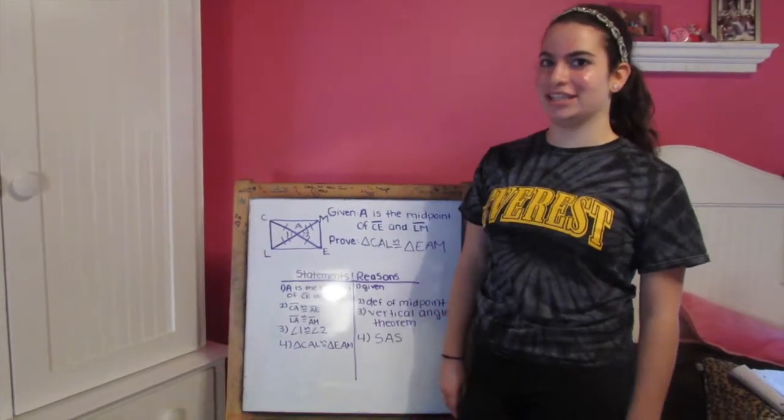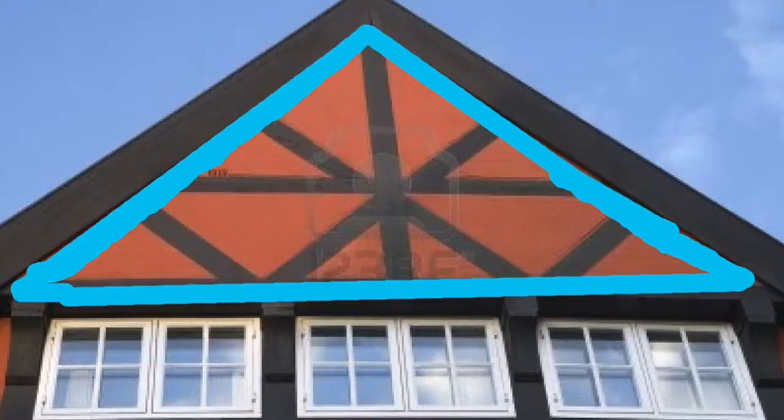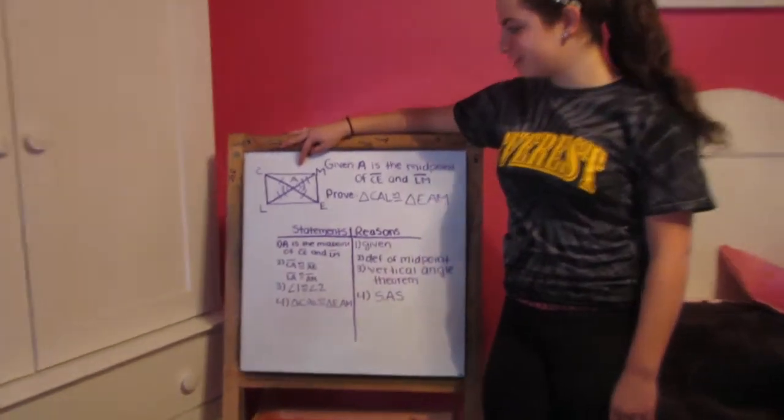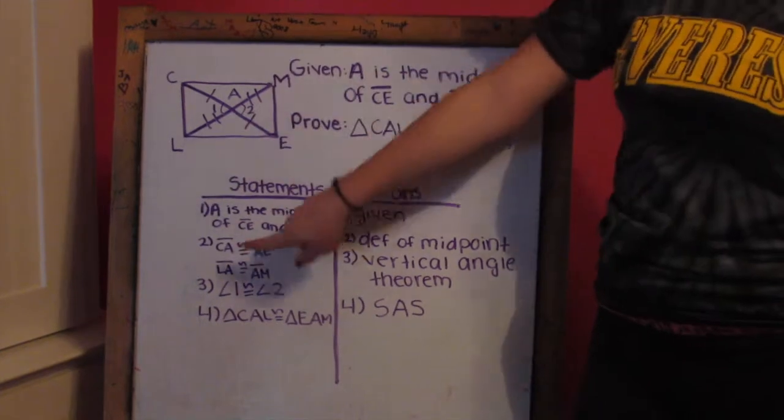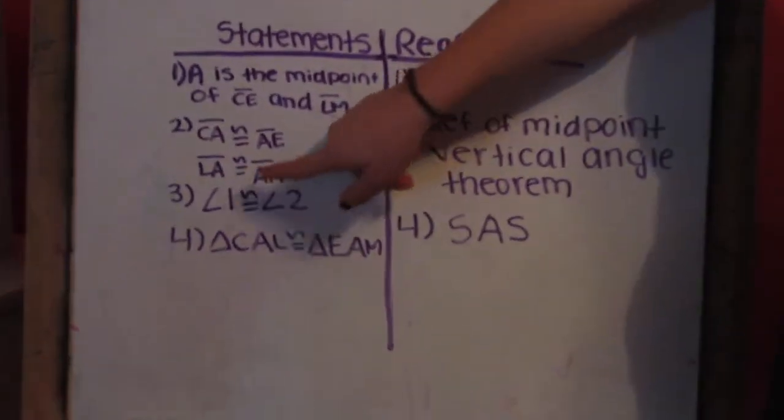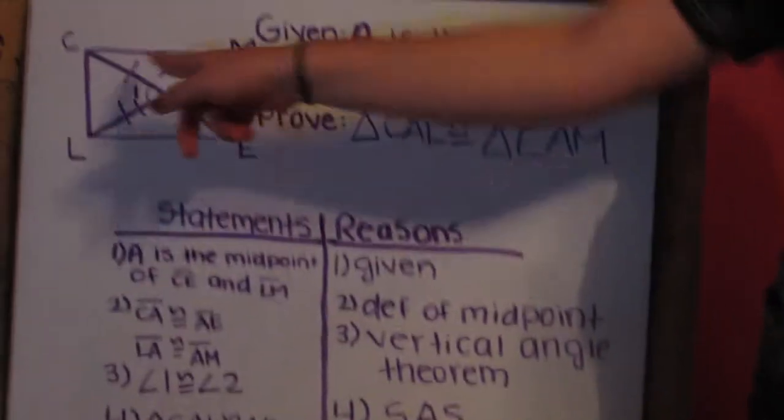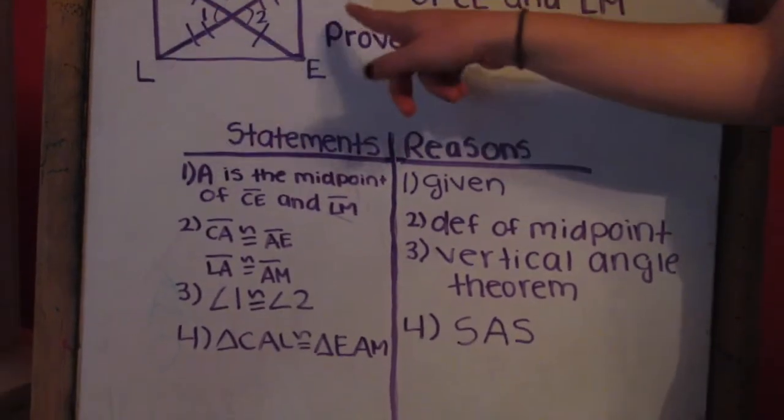In real life, architects need to know congruent triangle proofs so that the roofs don't collapse. Pretend that this is the aerial view of the roof of the house. The given is that A is the midpoint of segment CE and segment LM. Because of this, CA is congruent to AE and LA is congruent to AM, which is definition of midpoint. Angle 1 is congruent to angle 2 because of vertical angle theorem, which means that triangle CAL is congruent to EAM.